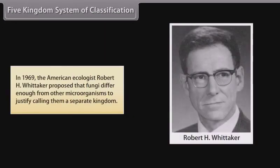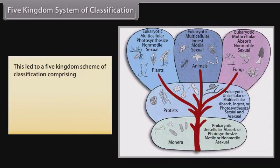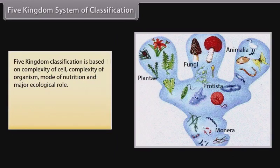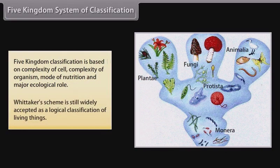Five kingdom system of classification: in 1969, the American ecologist Robert H. Whittaker proposed that fungi differ enough from other microorganisms to justify calling them a separate kingdom. This led to a five kingdom scheme comprising Monera, Protista, Fungi, Plantae, and Animalia. Five kingdom classification is based on complexity of cell, complexity of organism, mode of nutrition, and major ecological role. Whittaker's scheme is still widely accepted as a logical classification of living things.